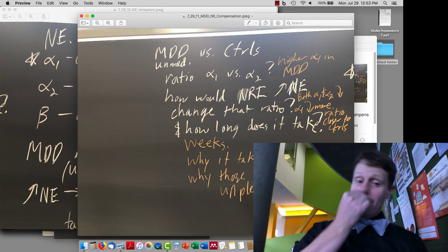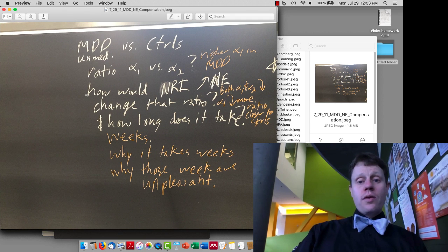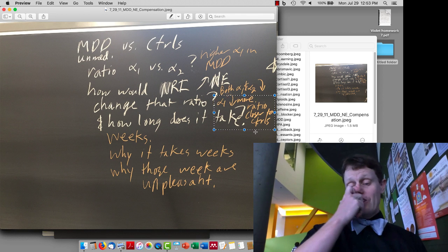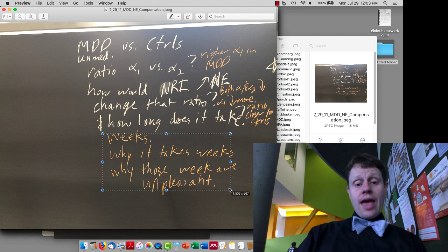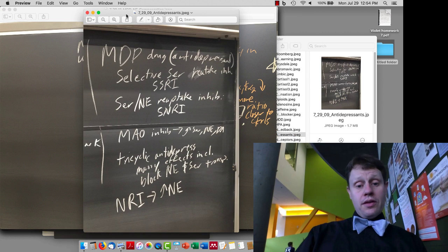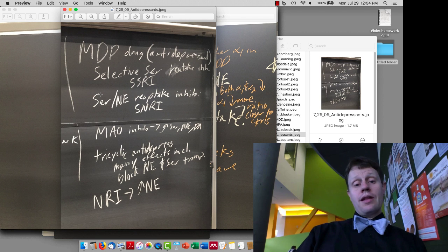So if we have unmedicated major depressive disorder patients versus controls, we expect to see more alpha-1 receptors in the patients with major depressive disorder. If you give a norepinephrine reuptake inhibitor, then that will decrease both the alpha-1s and the alpha-2s. But again, the alpha-1s are faster and more efficient at getting removed. So that's going to change our ratio to be more similar to the controls. But this takes weeks to take effect. And it takes weeks because compensation is slow. And those weeks can be very unpleasant in part because you're already having too much alpha-1 receptors, and now we're putting even more norepinephrine through them, which can make the symptoms worse rather than better. There are a few other theories out there that also relate to this. Some other things we'll talk about when we talk about serotonin.